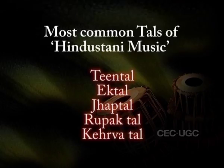Teen Thal, Ek Thal, Jhab Thal, Rupak Thal, and Kehra Thal are the most common Thals of Hindustani music which are played on Tabla. There are some Thals which are usually played on Pakhavaj instruments with the singing styles like Dhrupad and Dhamar. Sultal is one of such Thals which is usually played on Pakhavaj, but nowadays it is played on Tabla also.